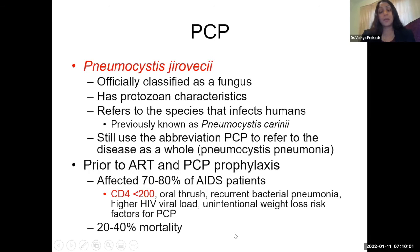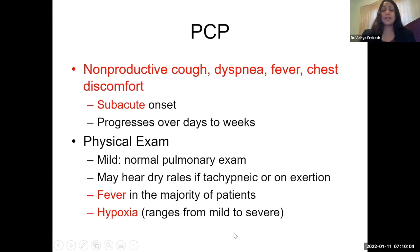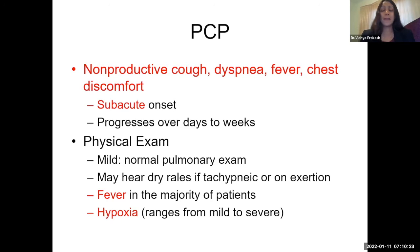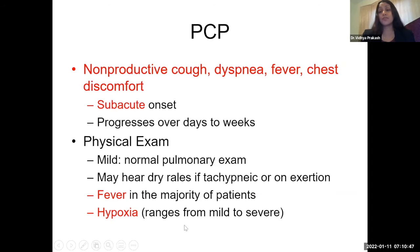Patients present with nonproductive cough, dyspnea, fever, and chest discomfort. Unlike bacterial pneumonia, which is more acute, PCP presents more subacutely — progressing over days to weeks. Physical exam can oftentimes be normal, so don't exclude pneumonia in an HIV patient with these symptoms based on a normal pulmonary exam. If tachypneic or exerting themselves, you may hear dry rales. The majority of patients will be febrile and have some level of hypoxia, ranging from mild to severe.